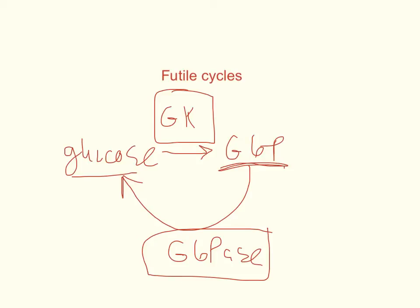However, glucose 6-phosphatase is never really completely off, or usually not. Glucokinase is usually not completely off either. Neither one of them is ever really completely off or completely on. They're just up-regulated and down-regulated.